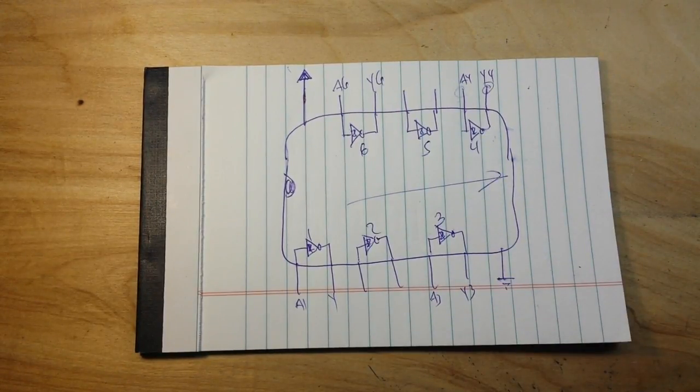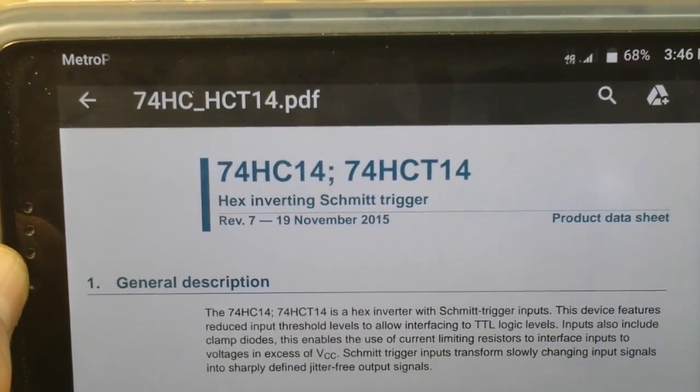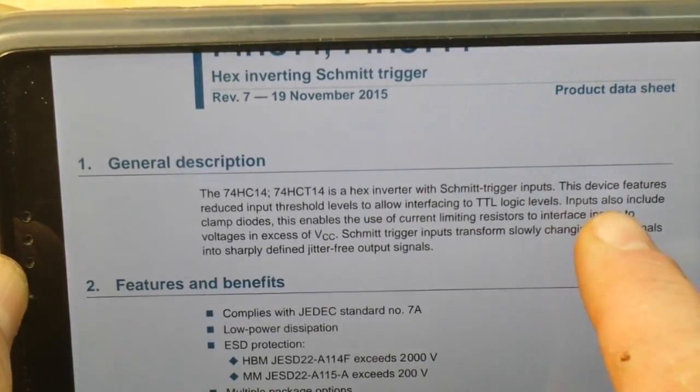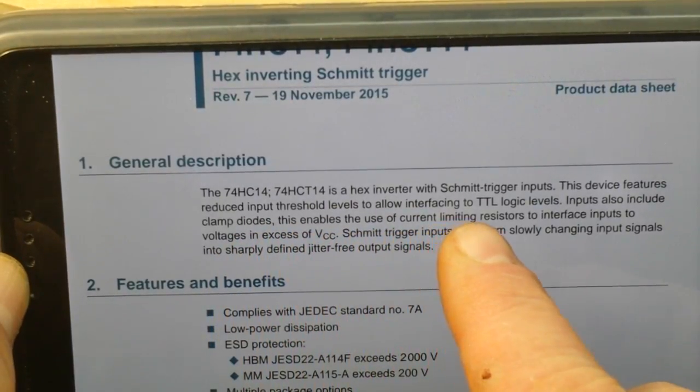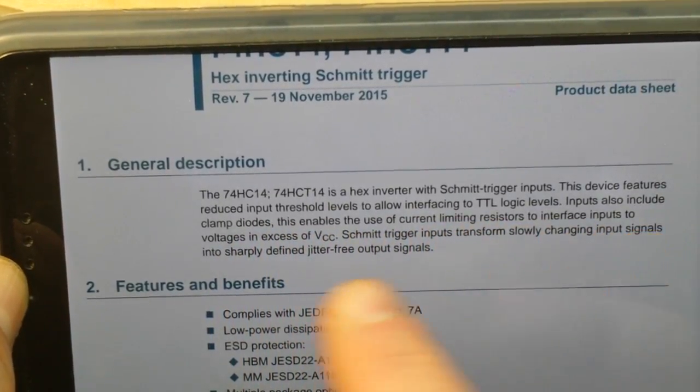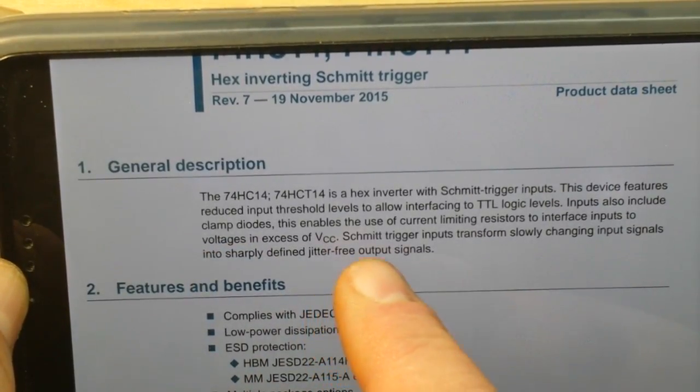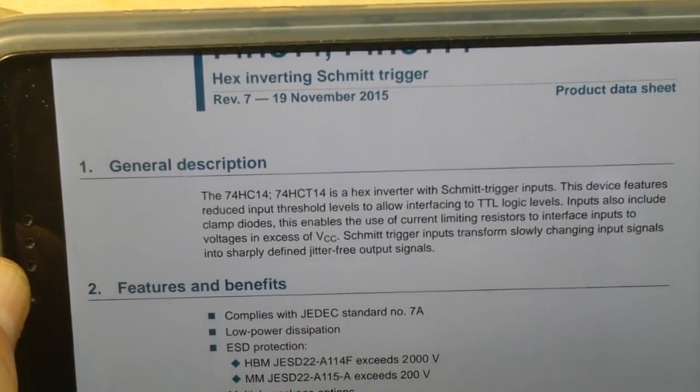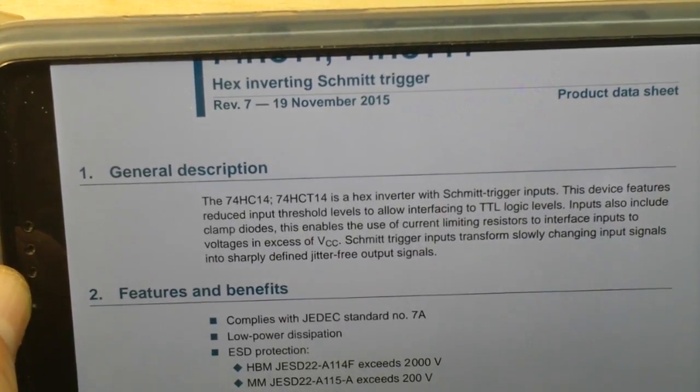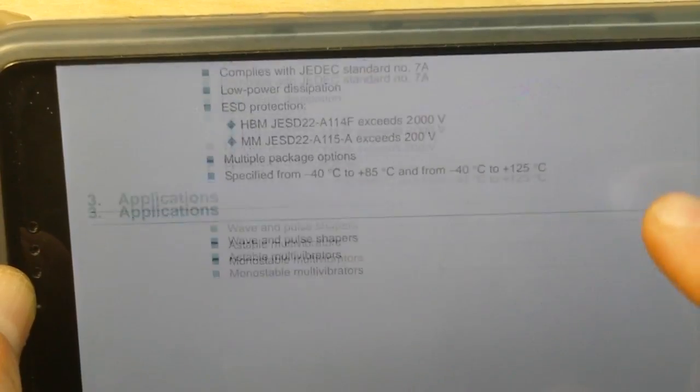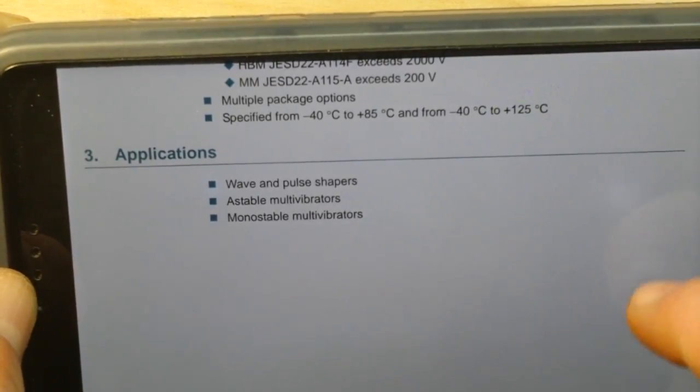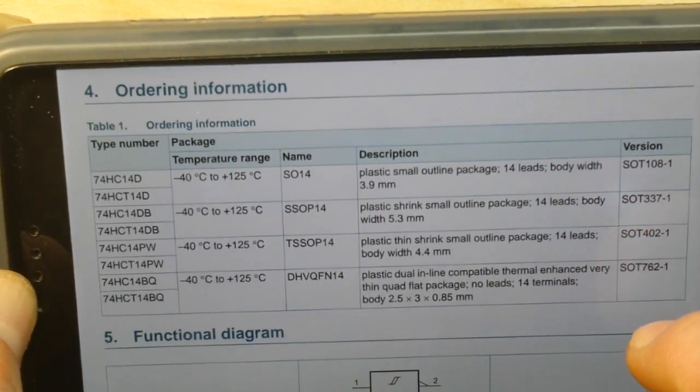Let's take a look at the data sheet. Here's the data sheet for the 74HC14, the inverting Schmidt trigger. You can see it says this device features reduced input threshold levels to allow interface into TTL logic levels. Inputs also include clamp diodes. This enables use of current limiting resistors to interface inputs to voltages in excess of VCC.